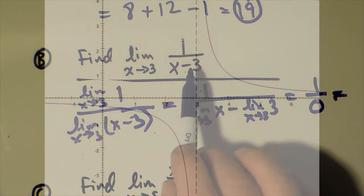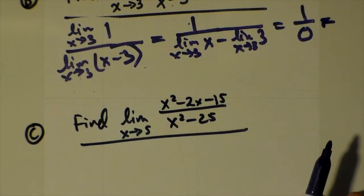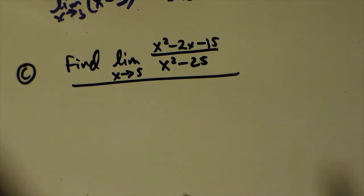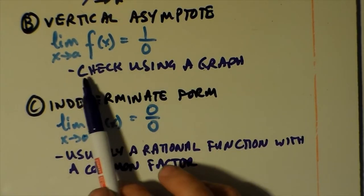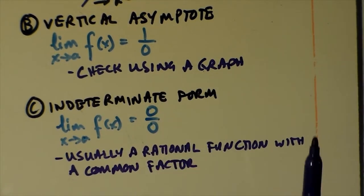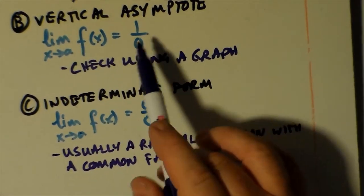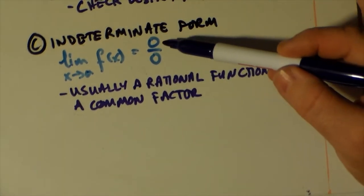You can check that on a graphing calculator or by making a table of values and seeing what happens as x gets super close to 3 from the left and from the right. Our third case is the indeterminate form, where you get a result of 0 over 0. We just covered the case where we had a vertical asymptote giving 1 over 0 — that's undefined — and we'd check that result using a graph.